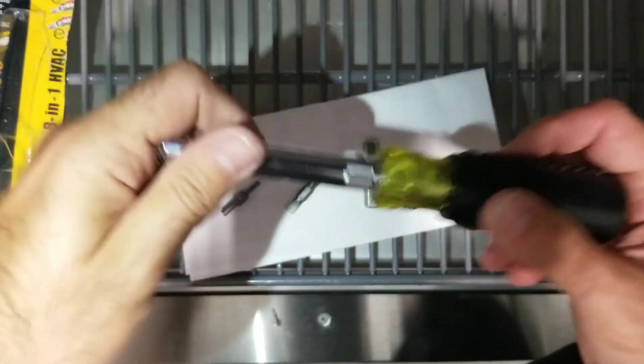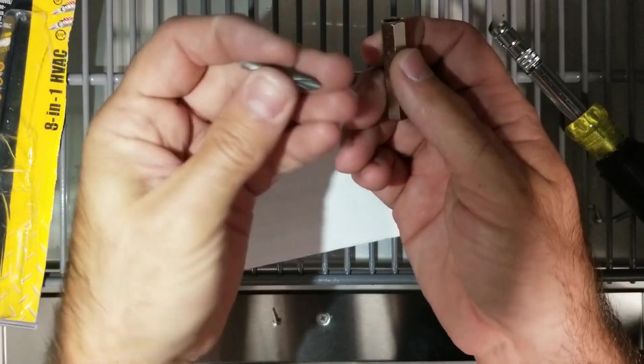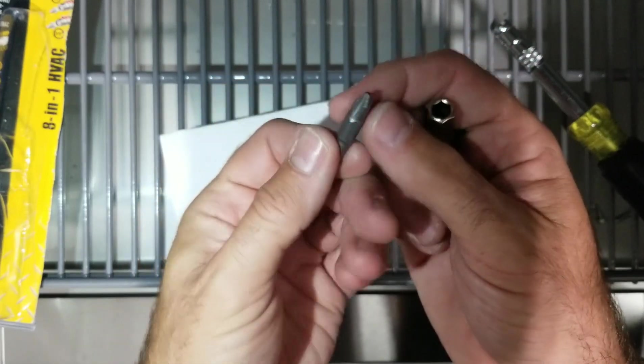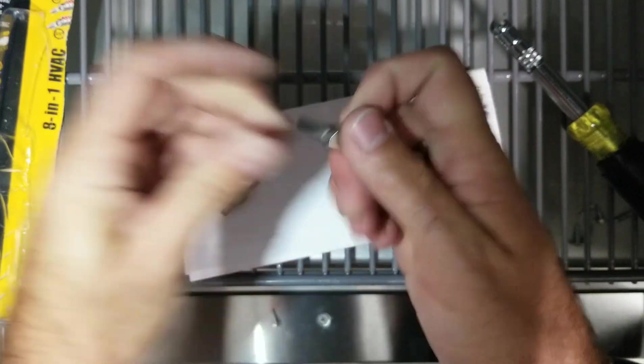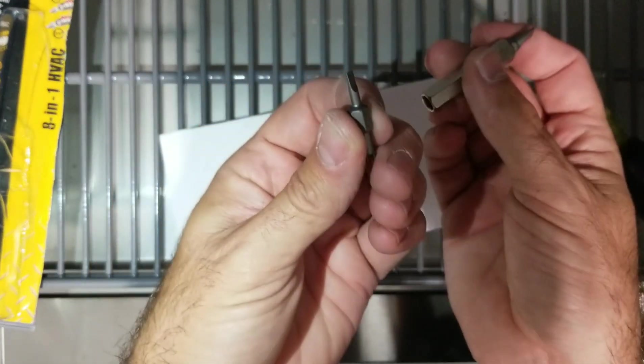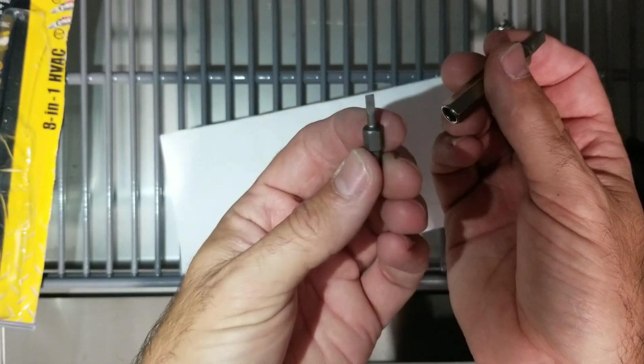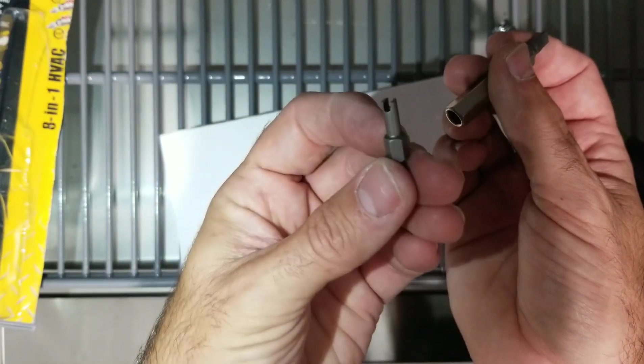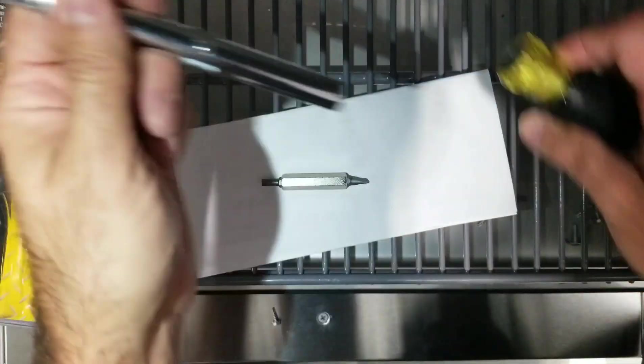Spin that around, and then it comes with, we have a flathead there. We've got a Phillips. We have a smaller flathead for smaller control stuff. You guys that work on controls know these little flatheads come in really handy. And then we got a core removal tool, and that just slides in there.